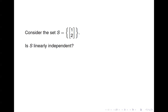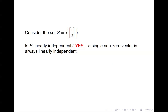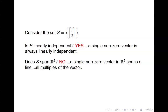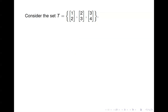Here's a set with just one vector. Is it linearly independent? Yes — a single nonzero vector is always linearly independent. The only time a single vector is linearly dependent is if that vector is the zero vector. Does this set span R2? No — all linear combinations of that vector are just multiples of it, giving only a line in R2, not all of R2.